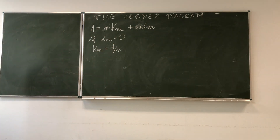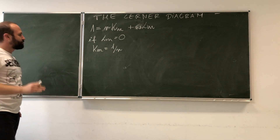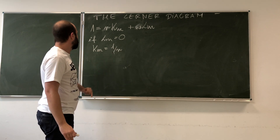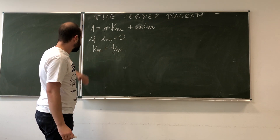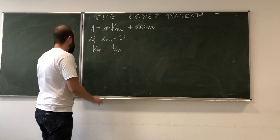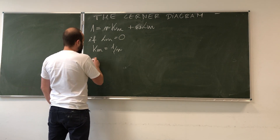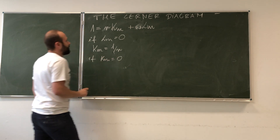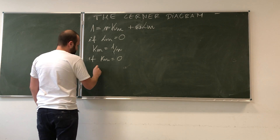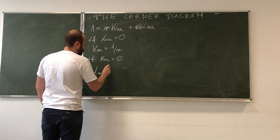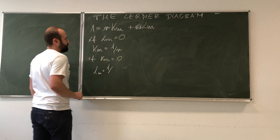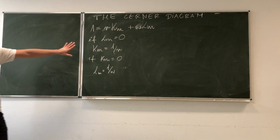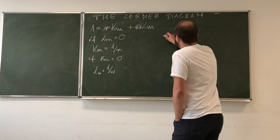So this is how much capital we can have at most. Then, if KM is zero, on the other hand, we can easily deduce that LM would be equal to 1 over W — that is, 1 over the wage. Now we can easily put this on a graph.